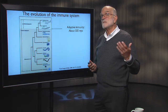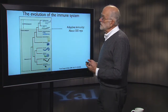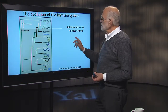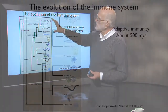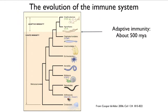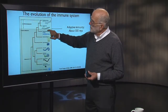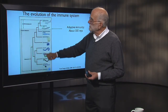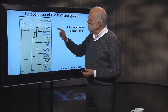The next example of something that happened long ago with medical consequences is the origin of adaptive immunity, at about 500 million years ago. The adaptive immune system originated between the agnathans — the lampreys — and the cephalochordates, the lancelets. Looking at these living examples on the evolutionary tree, we do not find vertebrate adaptive immunity below that branch, but we find it in all vertebrates above it. So something happened right there.